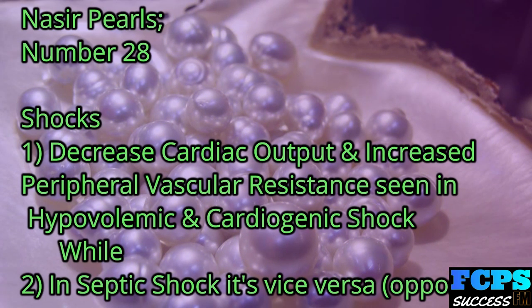Nasir Pearl number 28: Shocks — 1. Decreased cardiac output and increased peripheral vascular resistance are seen in hypovolemic and cardiogenic shock. 2. In septic shock, it is vice versa — the opposite pattern occurs.